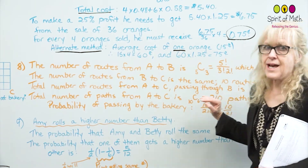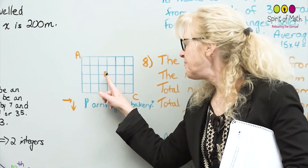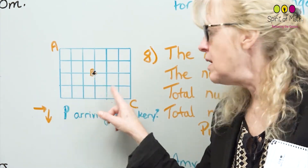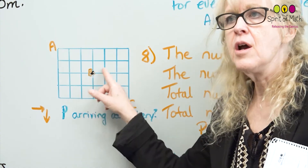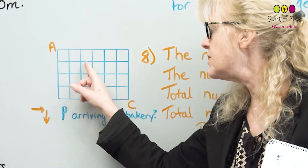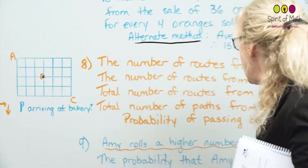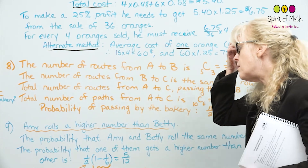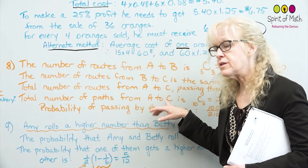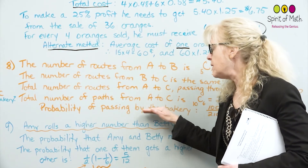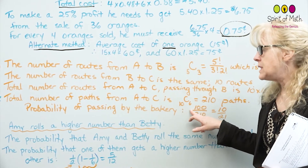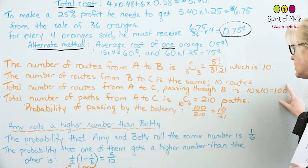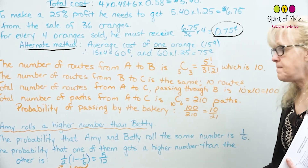The total number of paths from A to C is 10 choose 6, which equals 210 routes. So the probability of passing by the bakery is 100 divided by 210, which simplifies to 10 over 21.